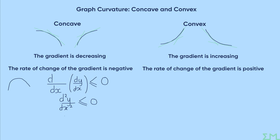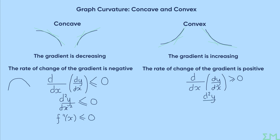In function notation, each dash means another derivative, so the second derivative is f''(x). The formal condition for concave is f''(x) ≤ 0, and for convex it is f''(x) ≥ 0. This is all you really need to know for determining where graphs are concave and convex.